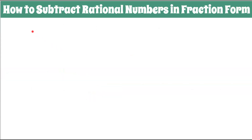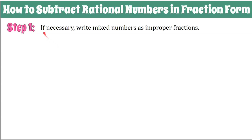Here is a procedural checklist on how to subtract rational numbers in fraction form. I'll also show you a graphic organizer to help you organize those steps and make them habit. You can also purchase this organizer in the description of the video. So step 1: if necessary, we're going to write mixed numbers as improper fractions. Best first step you can do.